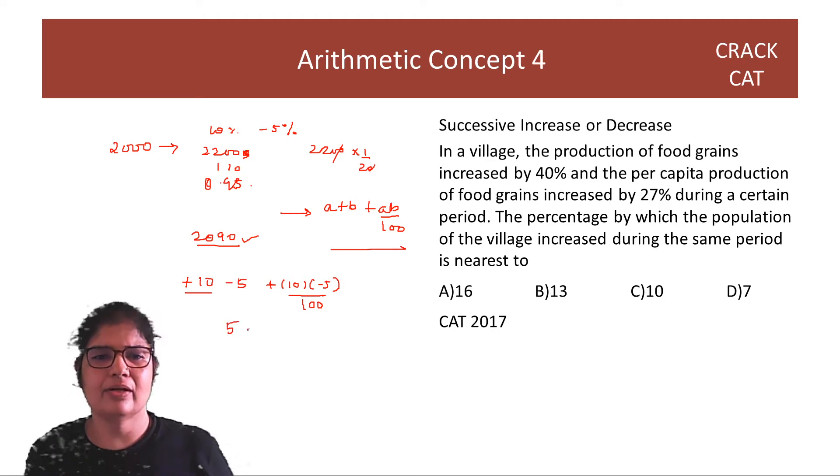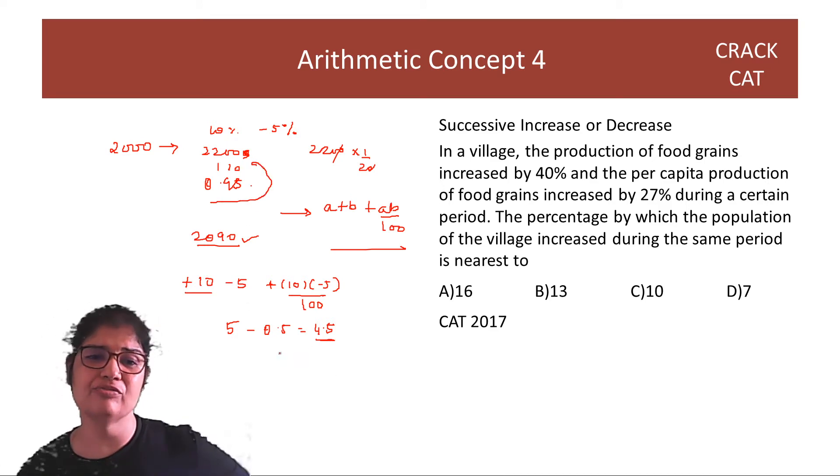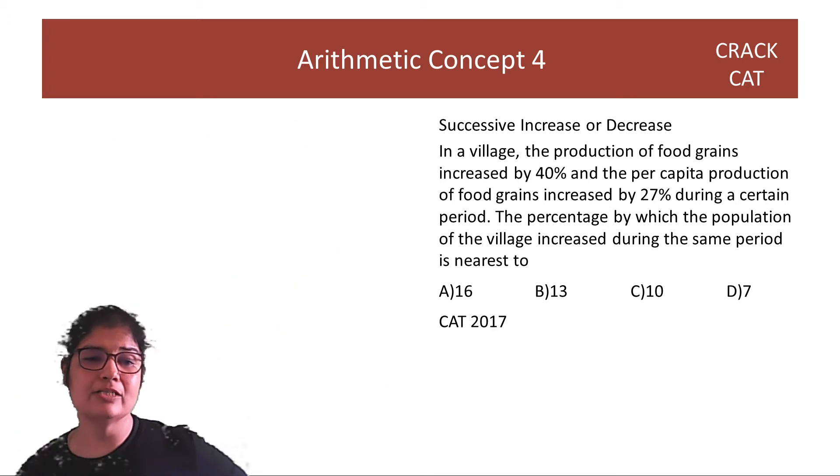So ye kya ho gaya? Ye hai 5 minus 0.5. So overall 4.5 ka change hai. So you see this is maybe a little faster depending on the numbers. Finding 0.95 of 2200 may be more tedious. It may be easier to find 4.5% of 2000. Ki hai ye toh 90 hai. And find out ki yes, the answer is going to be 2090. So this is your successive increase decrease fanda.